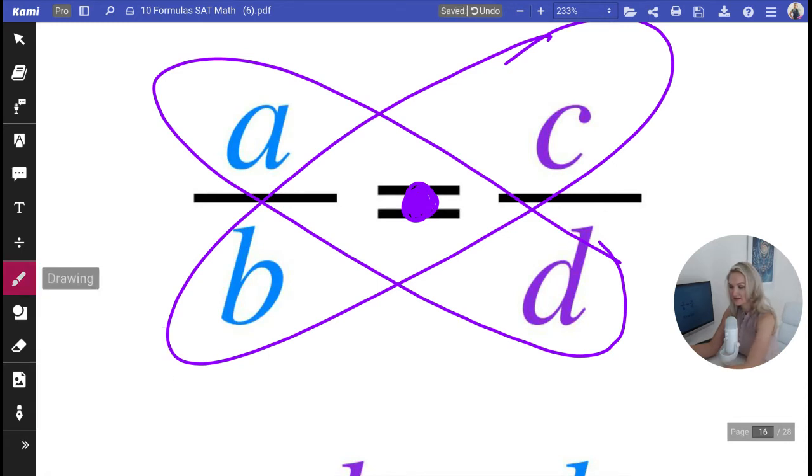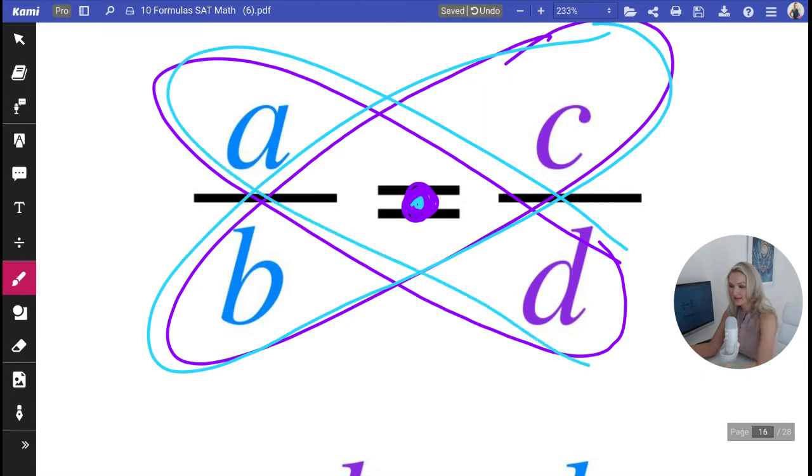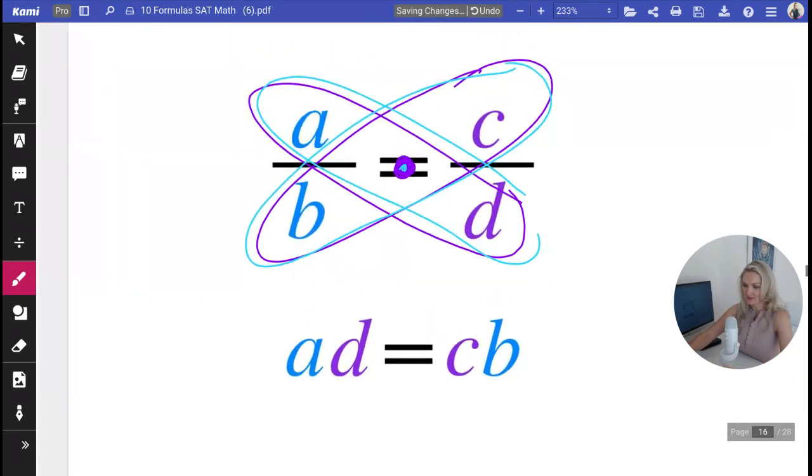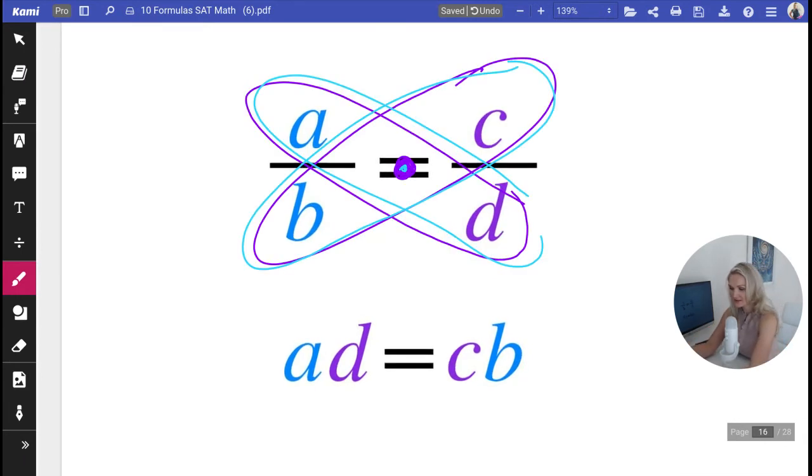That's exactly what cross multiplication gives you—there's this little multiplication sign in between. We actually employed cross multiplication when we talked about proportionality of circles.